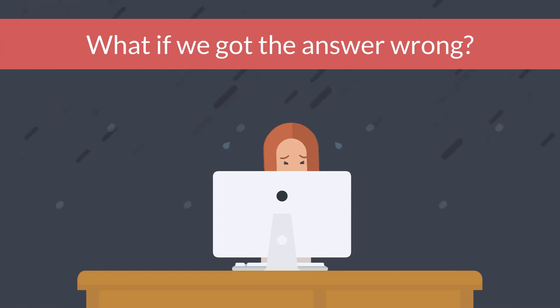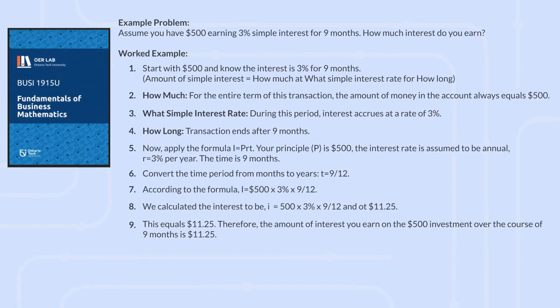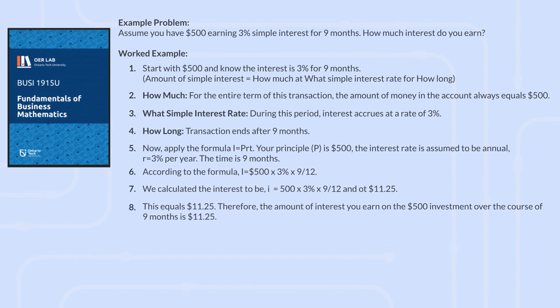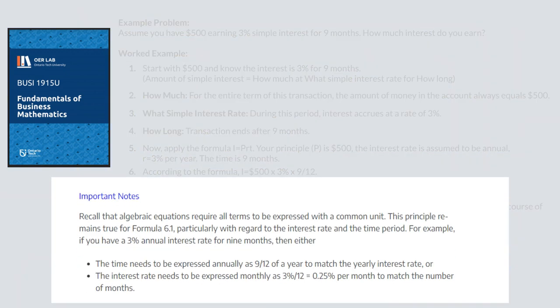But, what if we got the answer wrong? Say we completed the same problem, but this time, we forgot to convert from months to years, which is a common mistake when working this type of problem. In this case, we go back to the important note in chapter 6 in the textbook to figure out what we've done wrong.